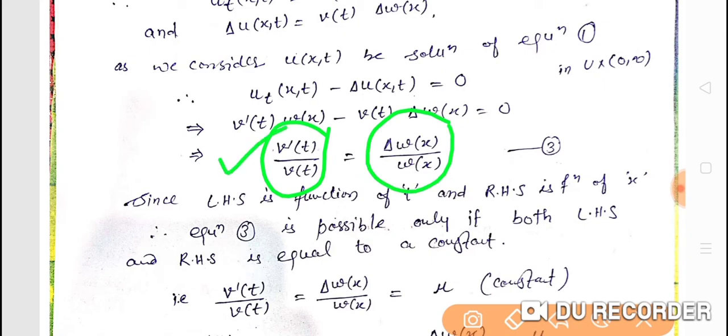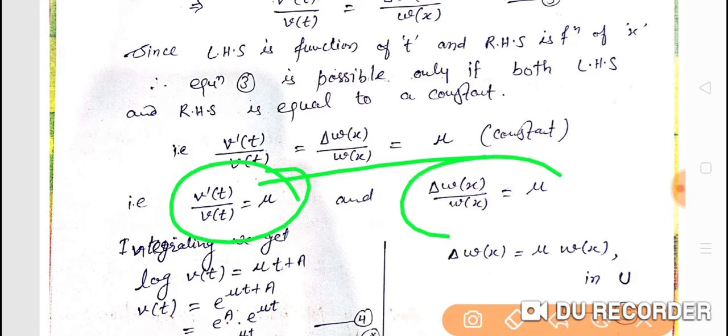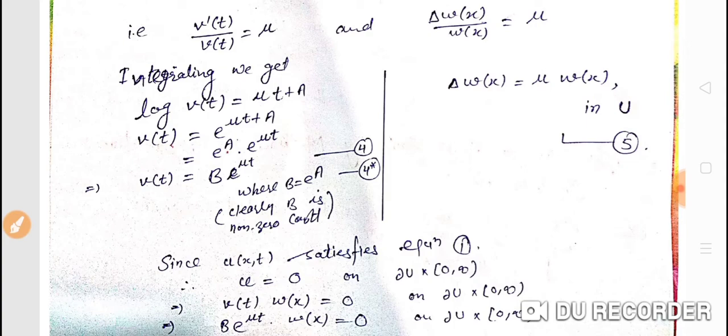But the left hand side is a function of t and the right hand side is a function of x. Since equation three says these two are equal, but a function of t and function of x can only be equal in one case: if both are equal to a constant. So we suppose they both equal some constant mu.